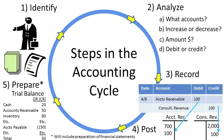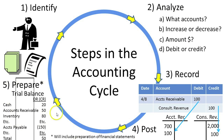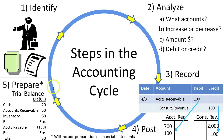This is just a visual summary of what we just said. We identified transactions, analyzed them, recorded them in the general journal, posted them to the ledger, and now we're ready to prepare the pre-adjusted trial balance. After that, we'll do the adjusting entries — analyze, record, post — and prepare the adjusted trial balance, then prepare the financial statements. Then we'll go through and close all temporary accounts, recording them, posting them, and preparing a post-closing trial balance.